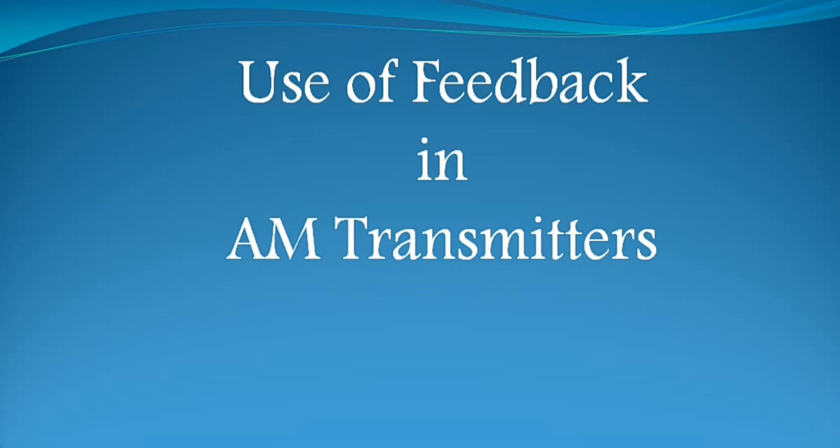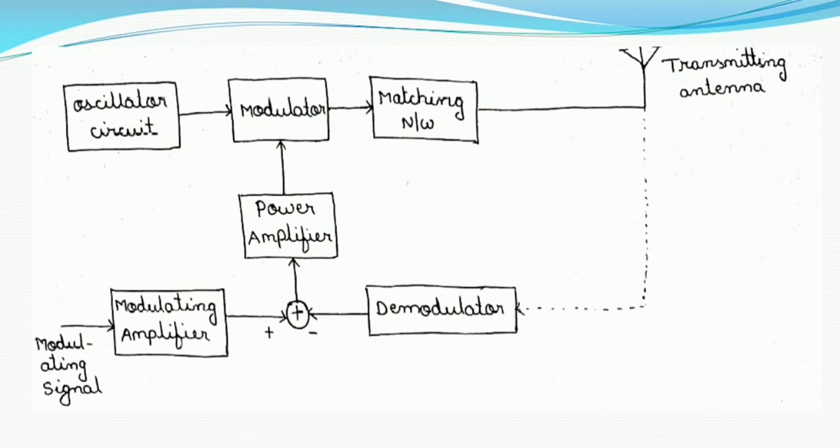Let us see how the feedback is used in the class C power amplifier modulator AM transmitter. The negative feedback is obtained through a linear demodulator, which detects a sample of RF signal that is extracted from the transmitting antenna.